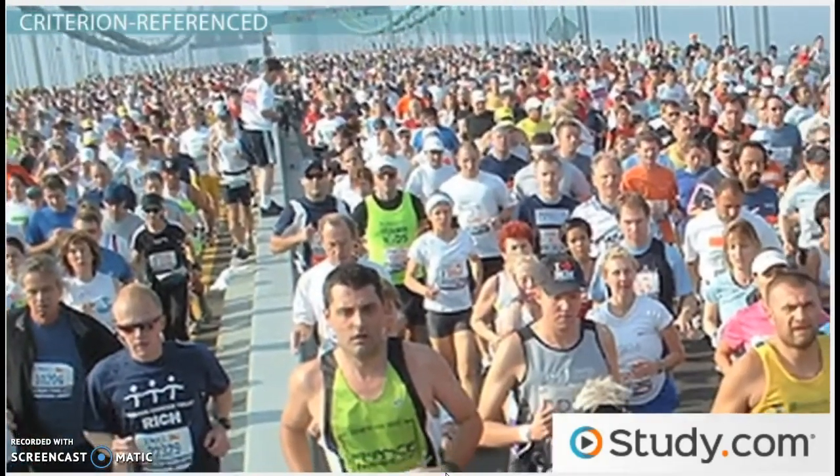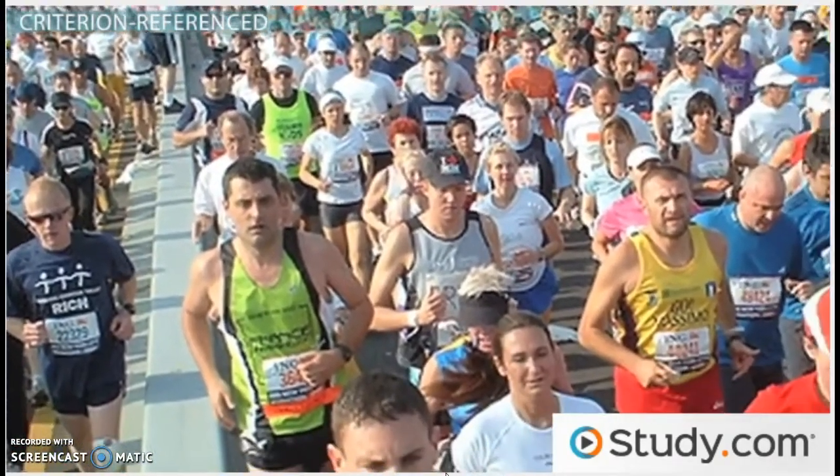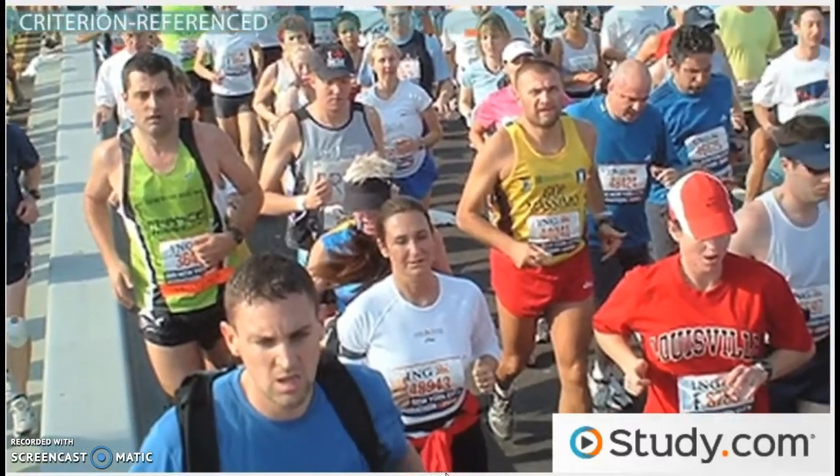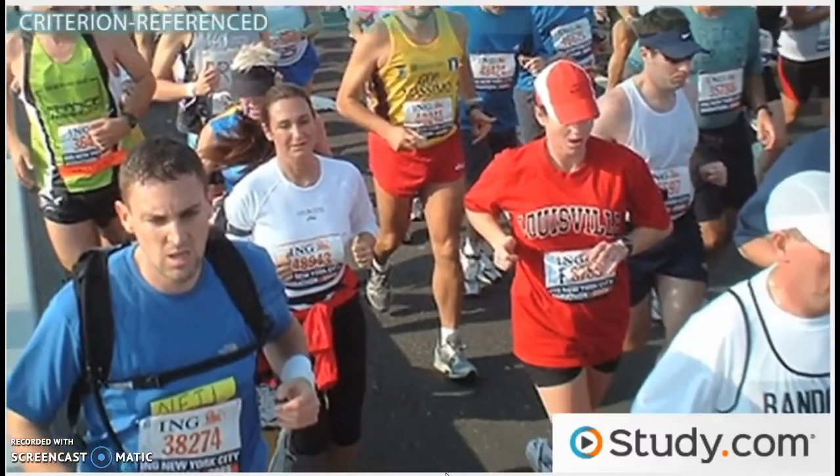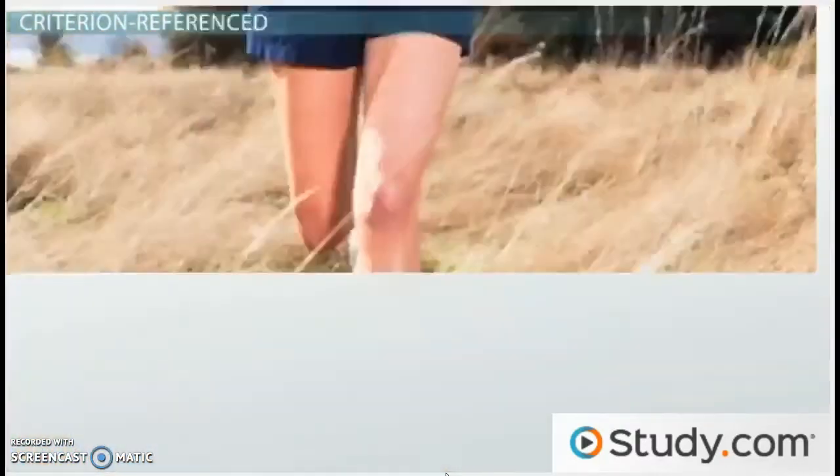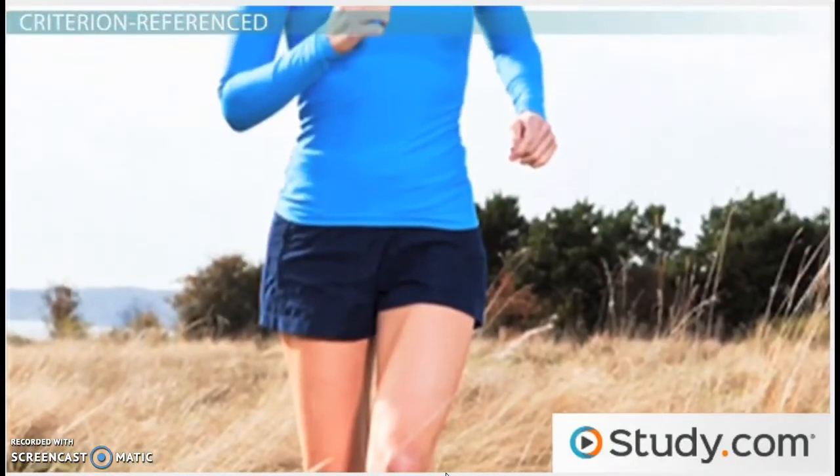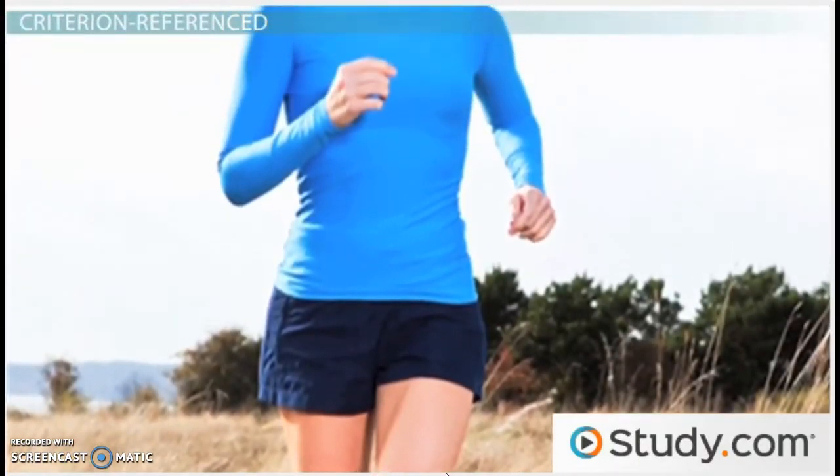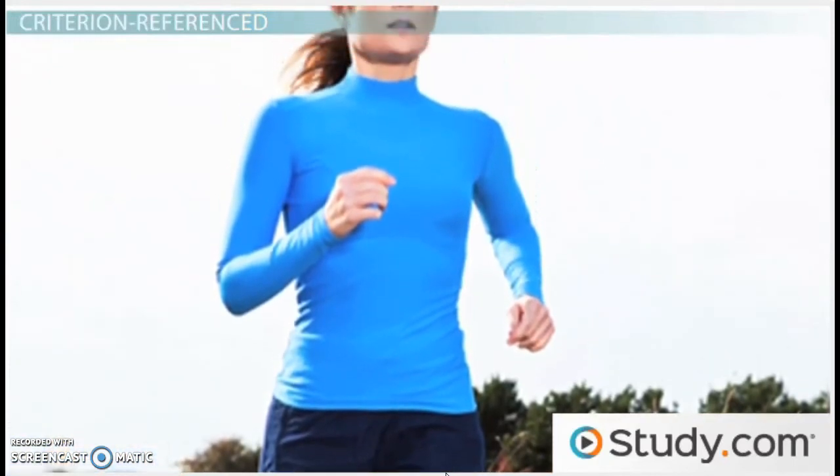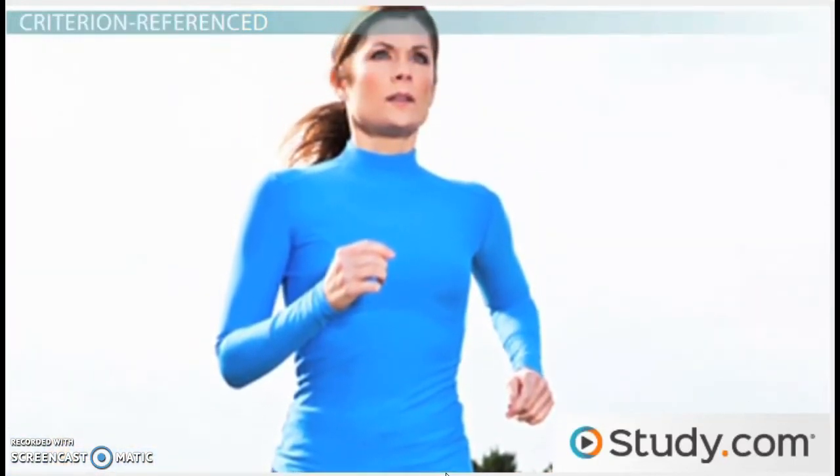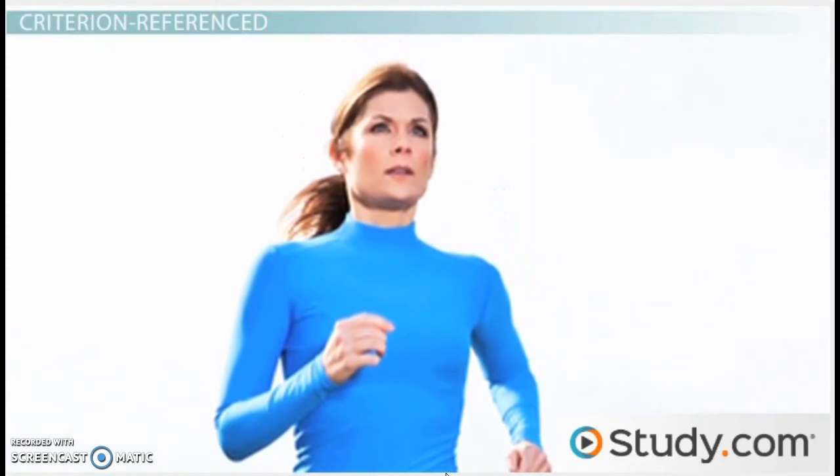Let's go back to our race scenario. Saying that a runner came in third place is norm referenced because we are comparing her to the other runners in the race. But if we look at her time in the race, that's criterion referenced. Saying she finished the race in 58.42 is an objective measure that is not a comparison to others.